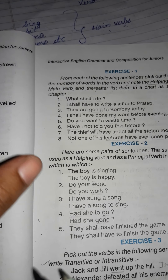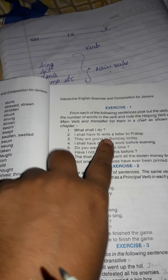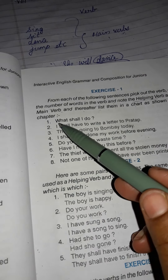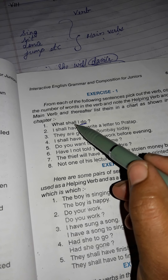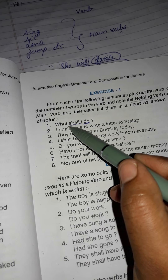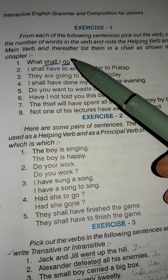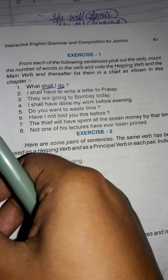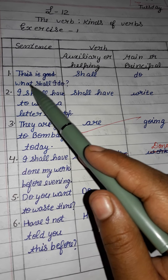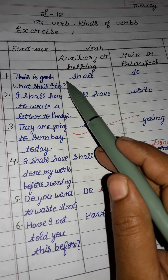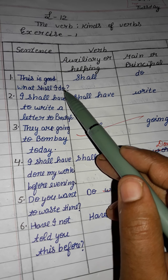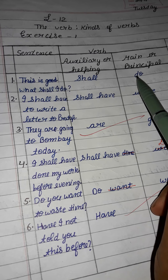Now make the box with columns: serial number, sentence, helping verb, main verb, number of verbs. First: 'What shall I do?' Shall is the helping verb. Do, though normally a helping verb, is here acting as the main verb. Two verbs total. Second: 'I shall have to write a letter to Pratap.' Shall and have are helping verbs. Write is the main verb.